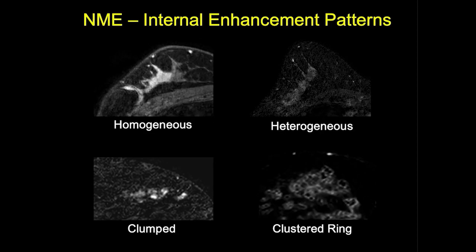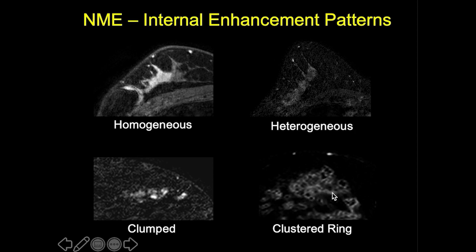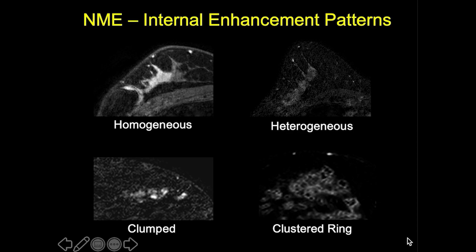Internal enhancement characteristics of non-mass enhancement include homogeneous — uniform and confluent — and heterogeneous — non-uniform and possibly separated by areas of parenchyma or fat. Clumped non-mass enhancement looks like a cobblestone or grape-like pattern and implies suspicious findings. Clustered ring-type enhancement consists of thin rims from enhancing ducts and also implies a suspicious finding.